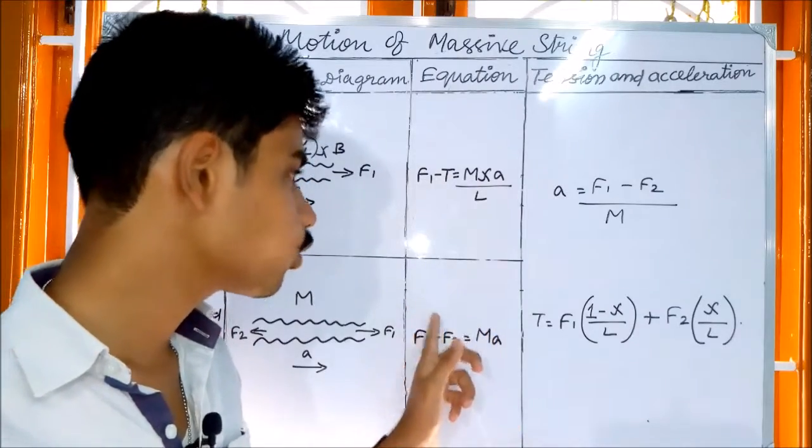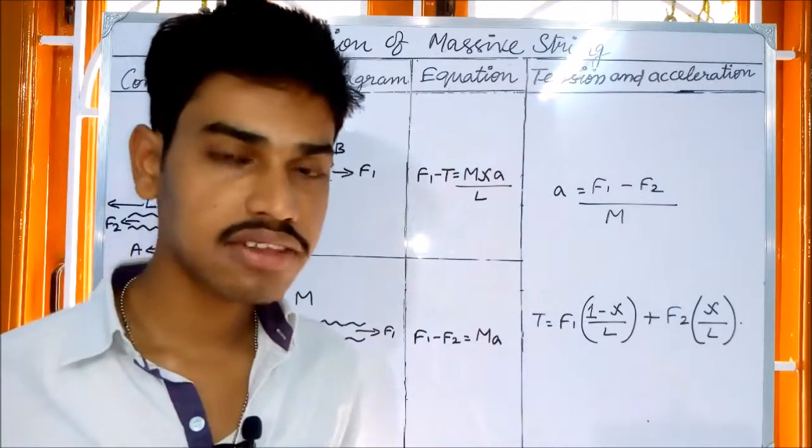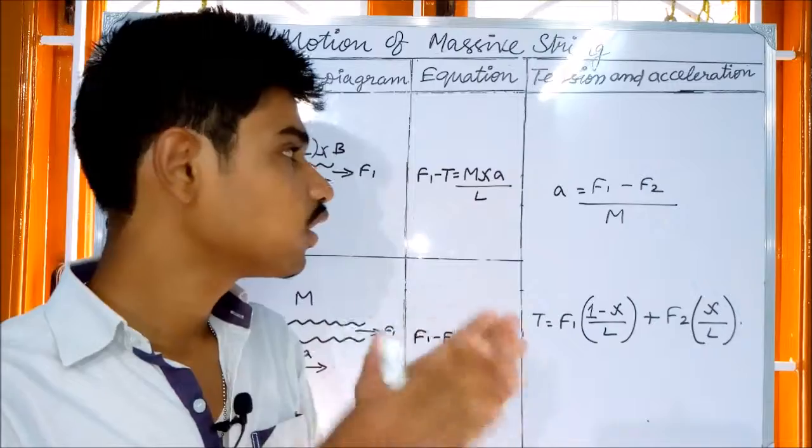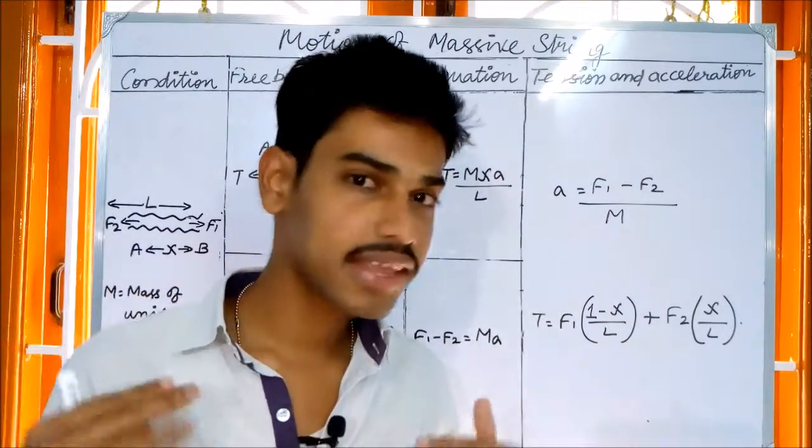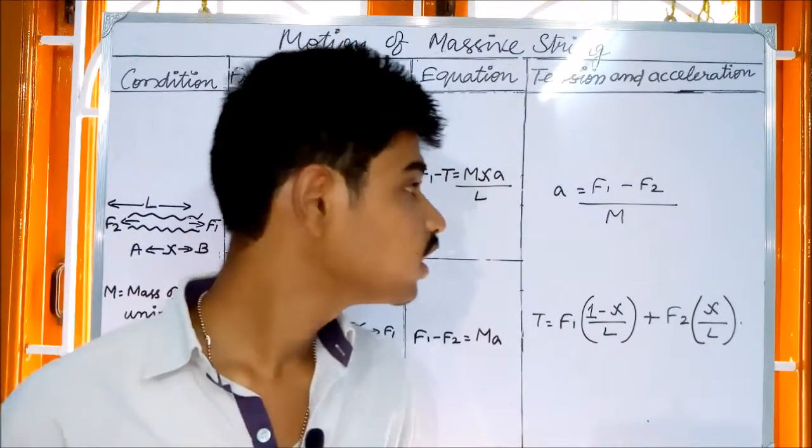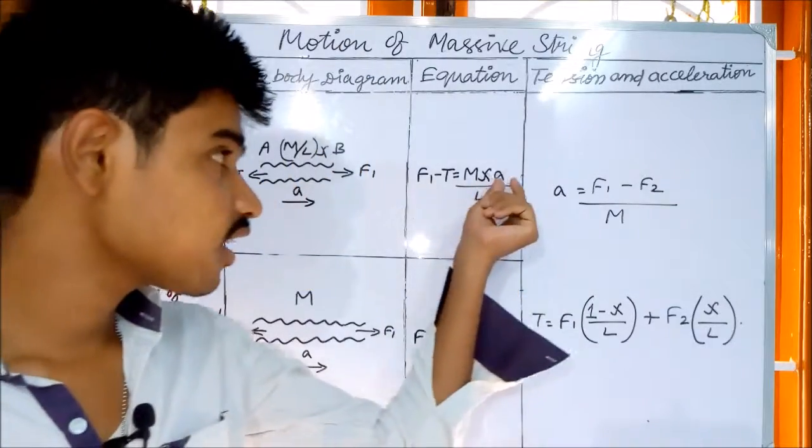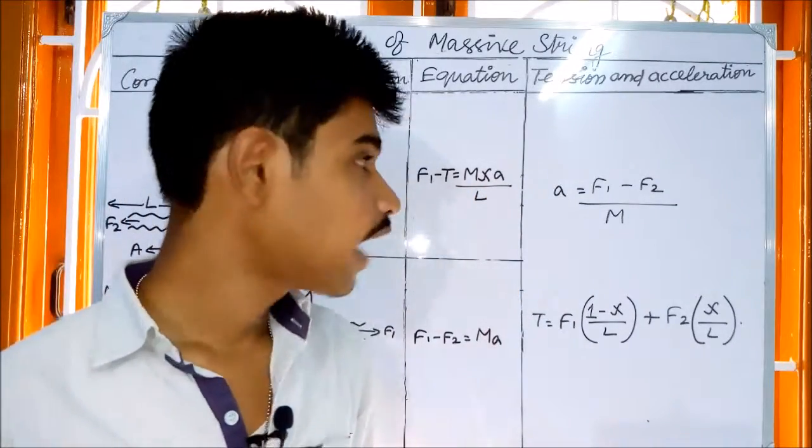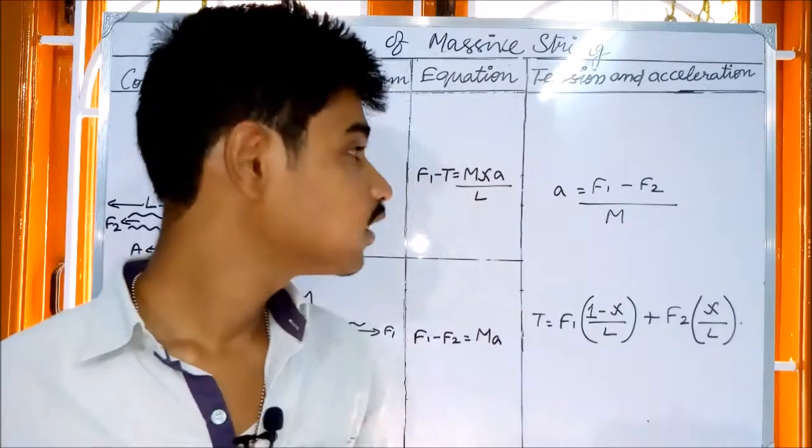So, we have mass and we have acceleration. So, F1 minus F2 divided by m. Next, we have a tension. Acceleration is going to be a term.